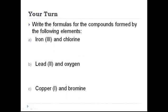Try some of these on your own. This is iron 3 this time, which is Fe 3 plus. And chlorine makes the Cl minus ion. We're going to cross the charges. And we get FeCl3.